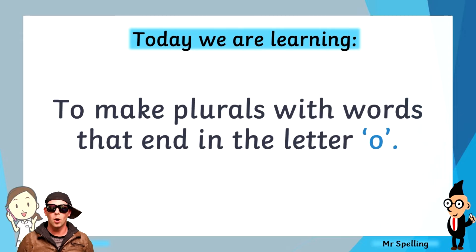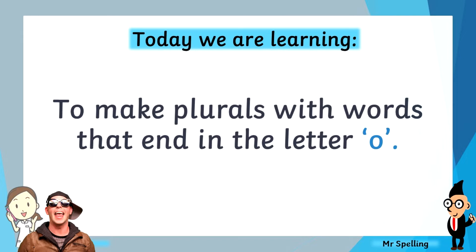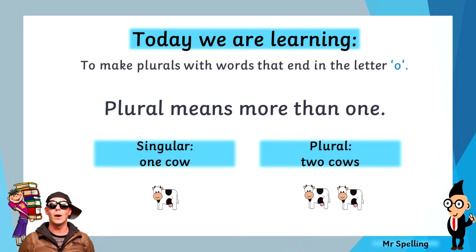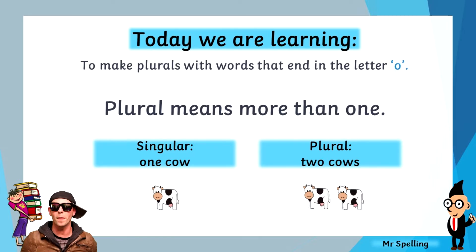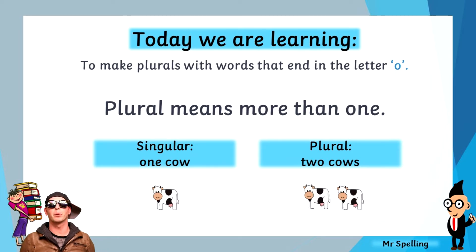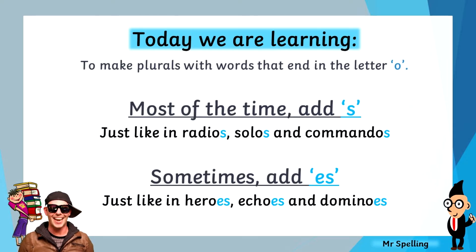Today, we are learning how to make plurals with words that end in the letter O. We should know this by now, but plural means more than one. The example I always give is: I have one cow — that is singular. I have two cows — the S on the end makes it plural. So, how do we make plurals with base words that end in O? Well, most of the time we add S, just like in radios, solos, and commandos.